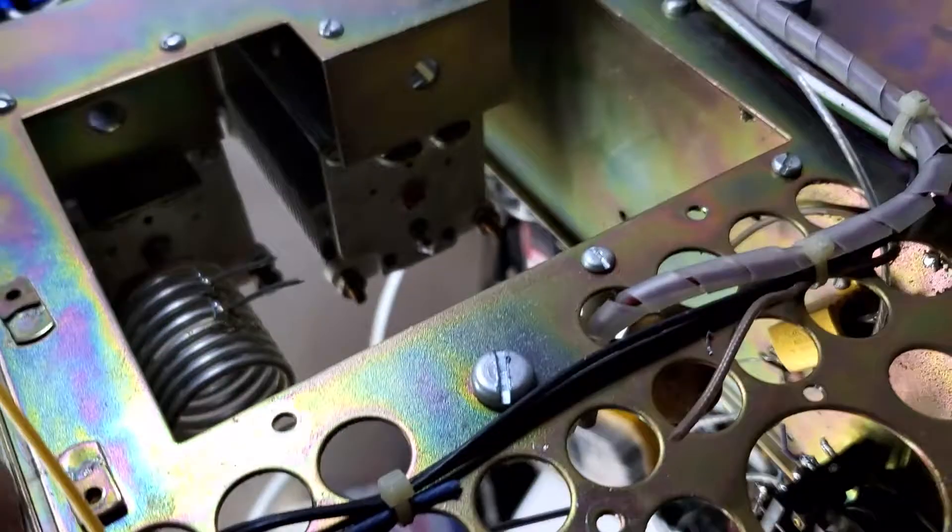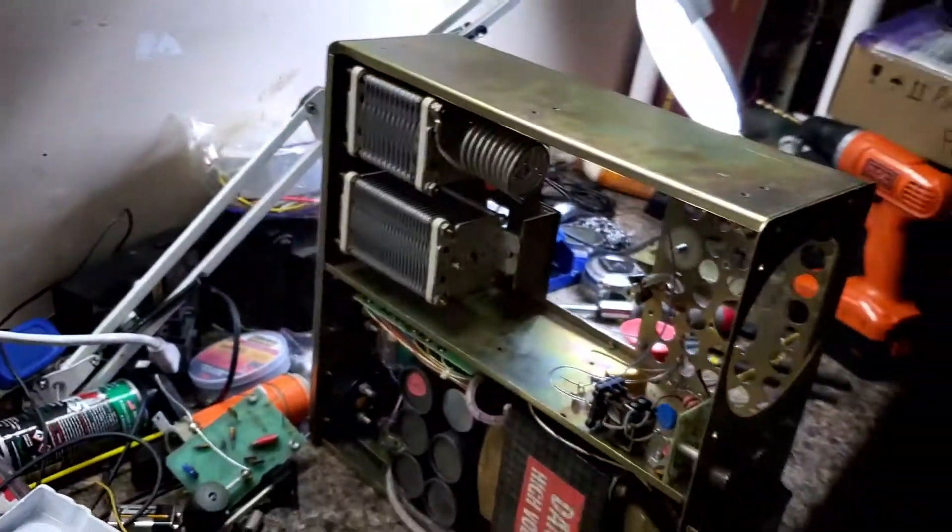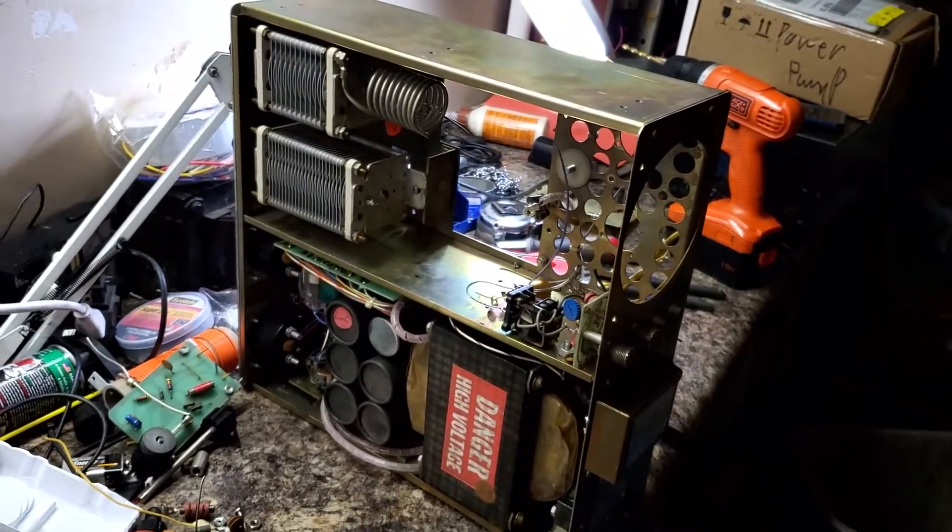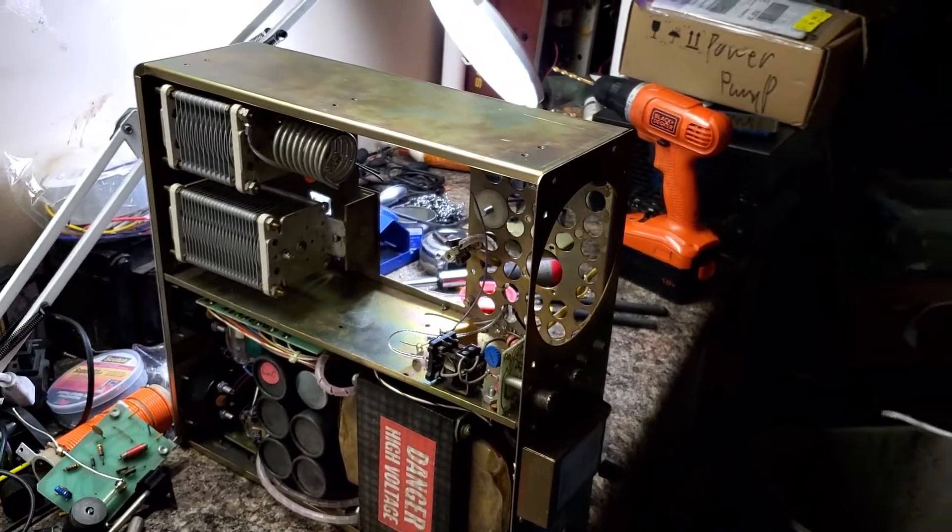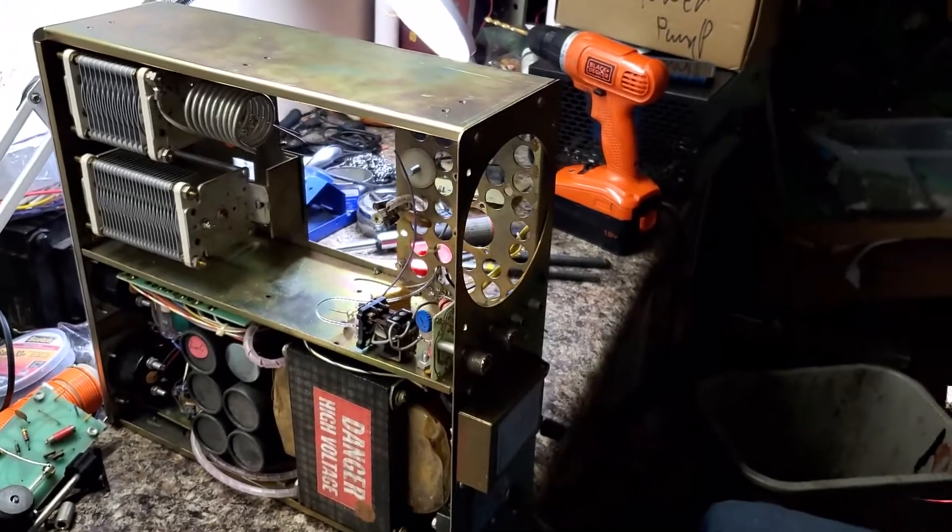What's going to happen is either in this cavity here, under here somewhere, or over here we're going to put the screen. The original tube was a triode and only required high voltage and filament. Now we're going to have filament, screen, adjustable bias, and filament running this tube.